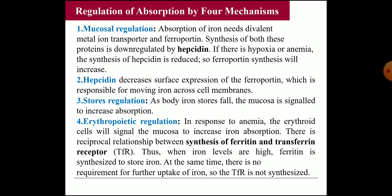The second method of regulation is stores regulation: as the body's iron stores fall, the mucosa is signaled to increase absorption. Similarly, in erythropoietic regulation, in response to anemia, erythroid cells signal the mucosa to increase iron absorption. There is also a reciprocal relationship between the synthesis of ferritin and transferrin receptors: when there is enough iron, more ferritin is stored, but at that time transferrin receptors are not produced, so there is no further uptake into the cell.